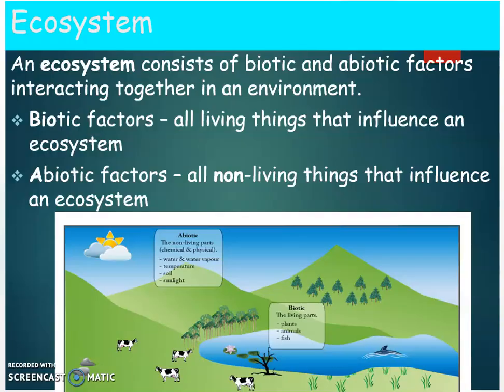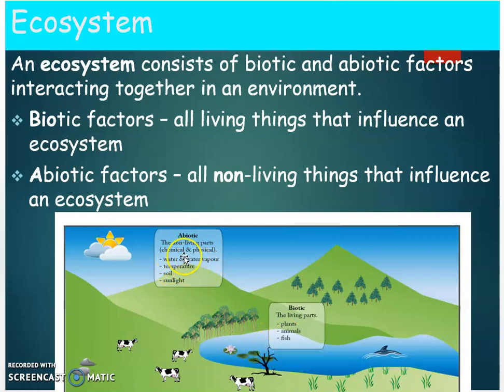Here's another diagram showing different biotic, or the living parts, and abiotic, or the non-living parts. The biotic or living parts are your plants, the animals, and the fish. The abiotic, or the non-living parts, are the water and water vapor, temperature, the soil, and the sunlight.